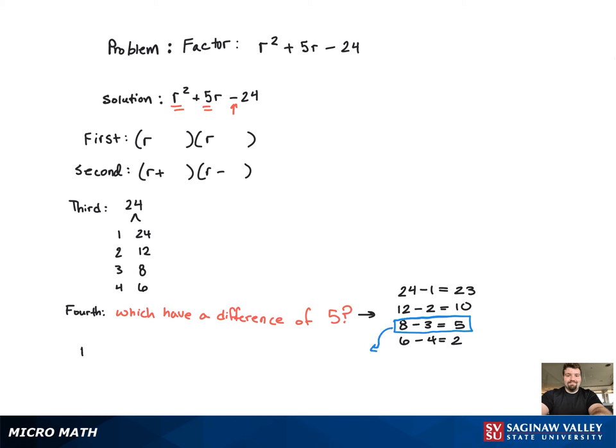So there's two options. There's either going to be r plus 8 and r minus 3, or there's going to be r plus 3 and r minus 8. But that's why you want to look at that sign. That plus sign there means that the sign of the bigger number has to have that same sign. So we're going to choose r plus 8 and r minus 3. And that's going to be the answer.